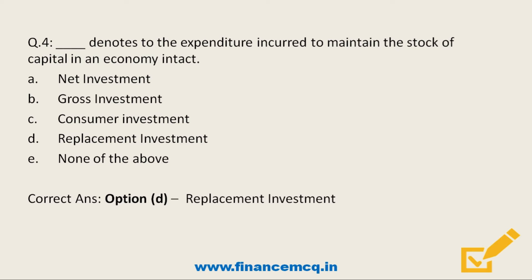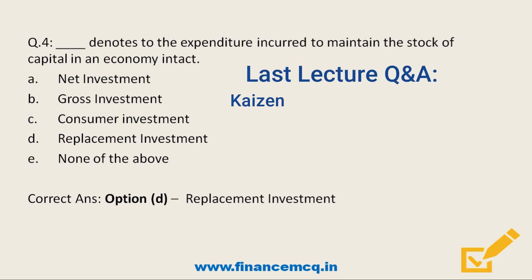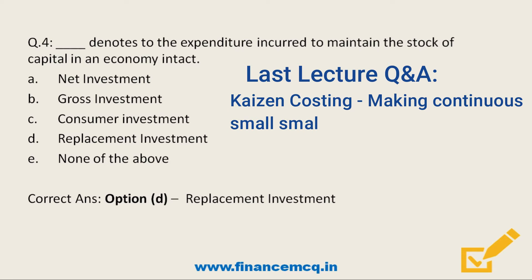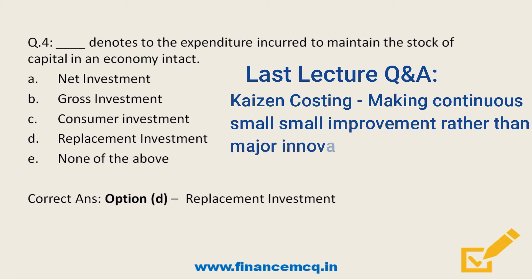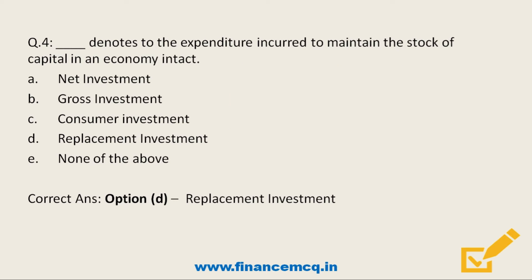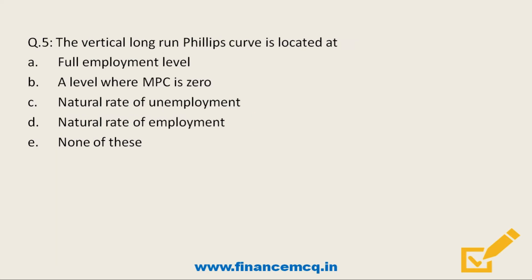Before moving on, let's discuss the question from my previous video: What is Kaizen costing? Kaizen is a Japanese word meaning continuous improvement. Kaizen costing is a mechanism of reducing or managing cost by making continuous improvement in relatively small activities, rather than any major innovative improvement.